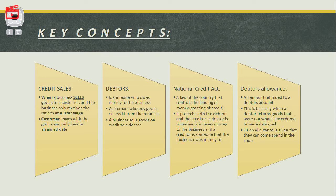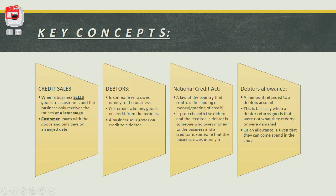A debtor is someone who owes money to the business — they owe me money, me being the business. A debtor is a customer who buys goods on credit from the business, and a business sells goods on credit to a debtor. Basically, a debtor is someone who owes money to me, the business.